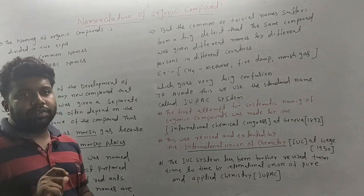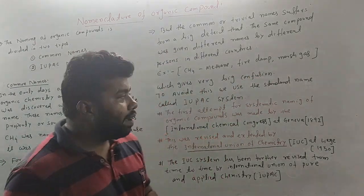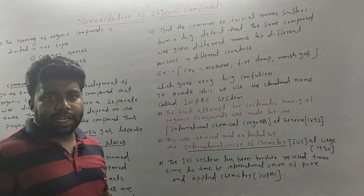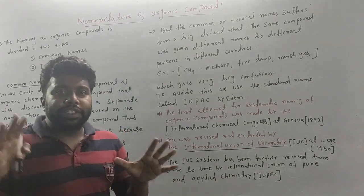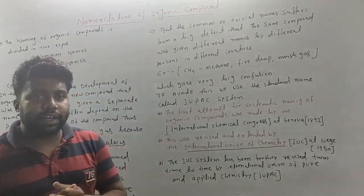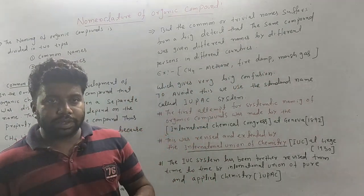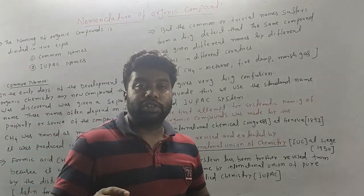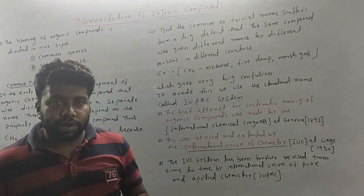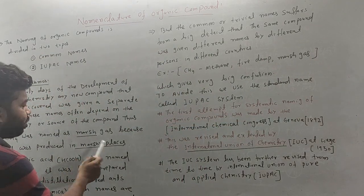CH4 is not just called methane — it was also called marsh gas and fire damp. So CH4 has multiple common names: methane, fire damp, and marsh gas. Marsh gas comes from marshes, and fire damp is found in mines. So about 30–40% of methane is found in such sources.